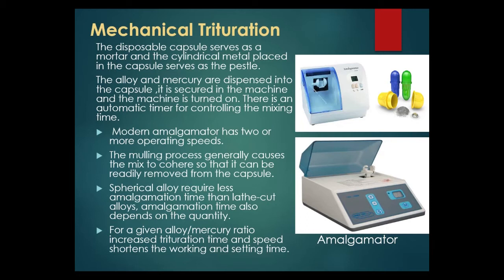Excess mercury is normally removed by placing the amalgam into gauze and squeezing to express it. Mechanical trituration: the disposable capsule serves as a mortar and a cylindrical metal piece in the capsule serves as a pestle. The alloy and mercury are dispensed into the capsule, secured in the machine, and the machine is turned on. There is an automatic timer for controlling the mixing time. Modern amalgamators have two or more operating speeds: low, medium, and high. The mulling process causes the mix to cohere so it can be readily removed from the capsule. Spherical alloys require less amalgamation time than lathe-cut alloys.